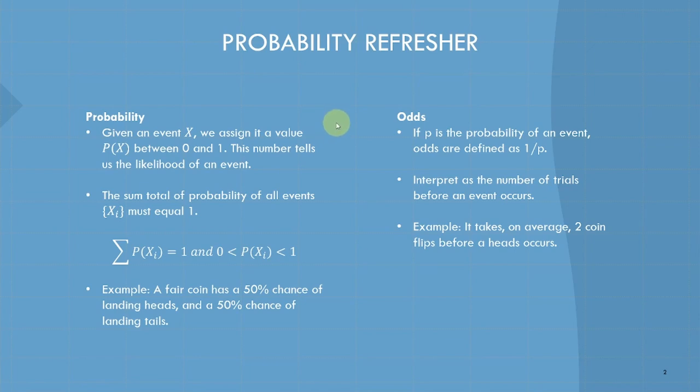It's a little more abstract than how you might think of it intuitively. Instead of probability, I think it's more intuitive to think of odds, which are really just the same thing as a probability. If you're given a value p as a probability, then the odds are just the inverse of that value, 1 over p. We interpret odds as the number of trials it takes before an event will occur, or on average. Going back to the coin flip example, on average it'll take 2 flips before we see heads.